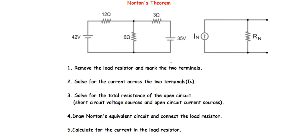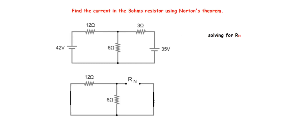Before you can do this, you will have to follow some steps. The first thing you will have to do is remove the load resistor and then mark the two terminals. The load resistor will be the resistor whose current we are supposed to find. Then you solve for the current across the two terminals, which is Norton's current — we also call this the short circuit current. Then you solve for the total resistance of the open circuit, and before you can do that you will have to short circuit any voltage source and open circuit any current source. After that, you draw out Norton's equivalent circuit, connect the load resistor, and then calculate the current in the load resistor.